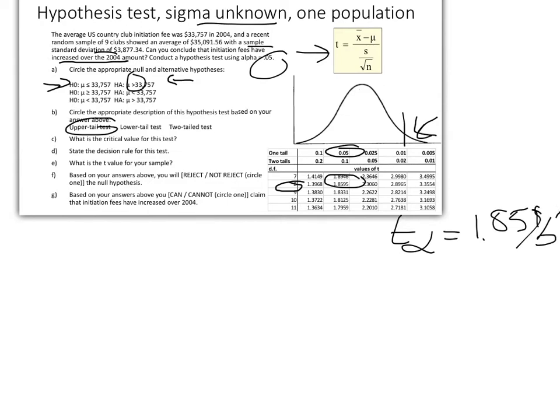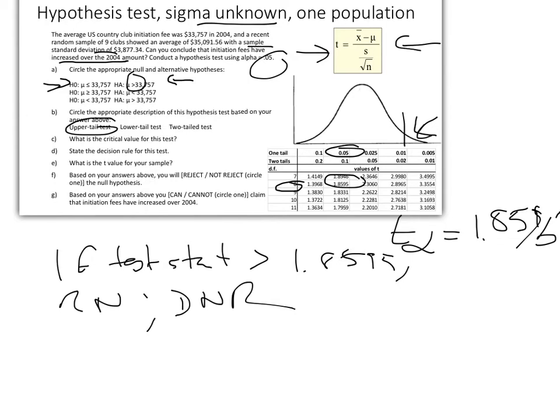What is the decision rule then? If the test stat greater than 1.8595, reject the null, otherwise do not reject. So basically, what we're just putting into words here, if our value that we calculate using this formula falls into the rejection area here, we will reject the null and say there is enough evidence based on our sample to conclude that initiation fees have increased.